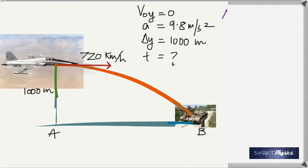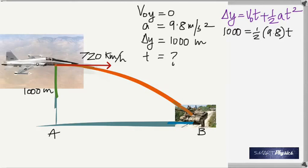When you look at these four quantities, the equation that could be used is delta y equals V0t plus one-half at squared. We know that because V0 is zero, this whole term is going to be zero. So you have 1000 equals one-half times 9.8 times t squared. One-half times 9.8 is 4.9.